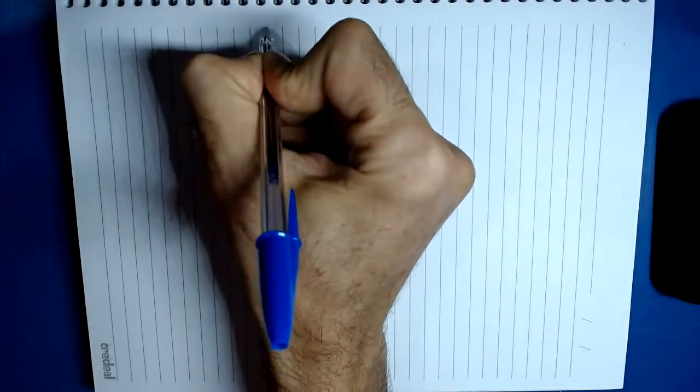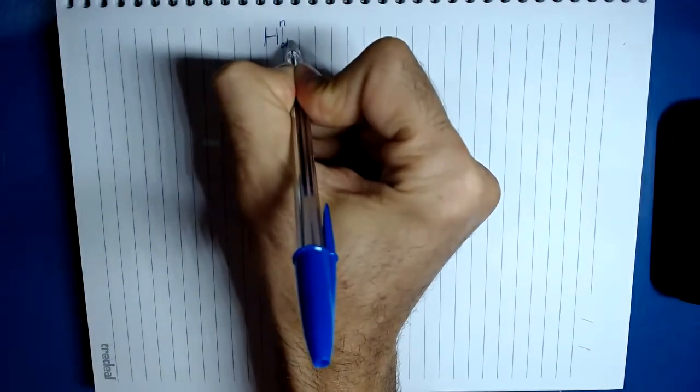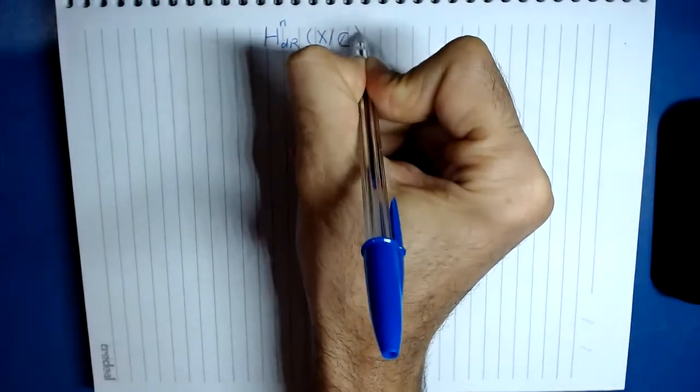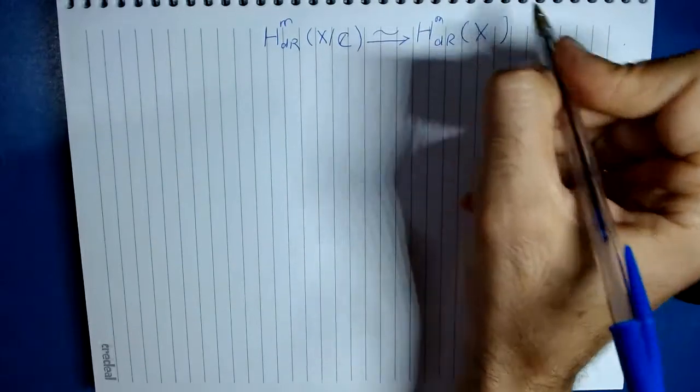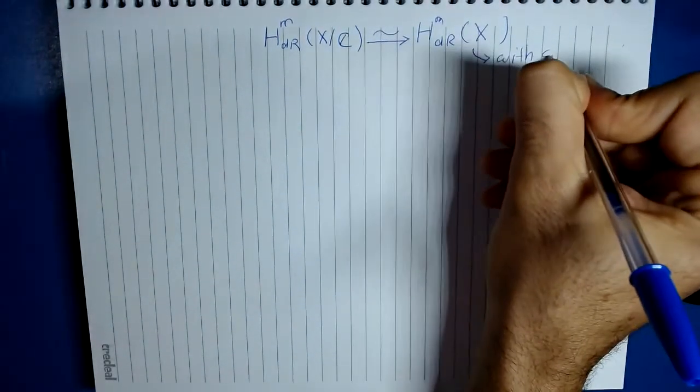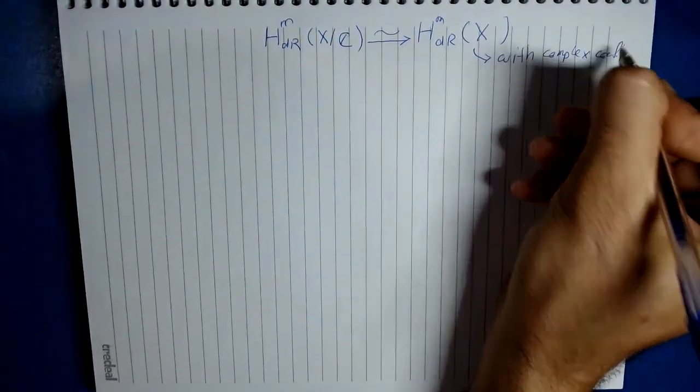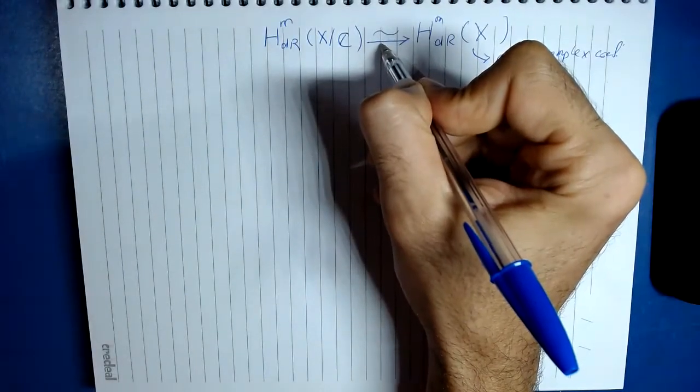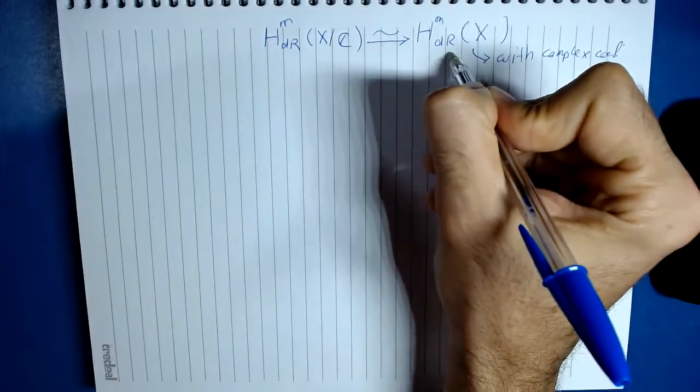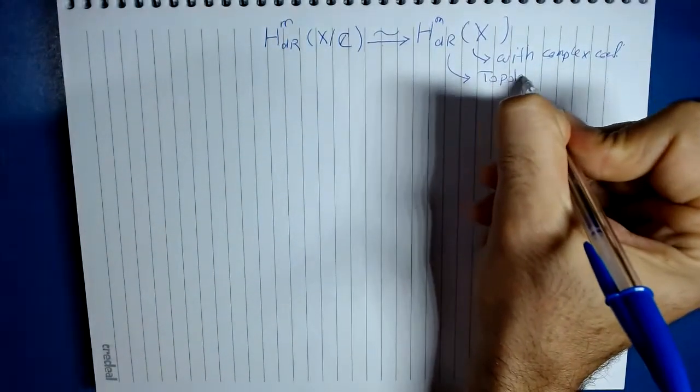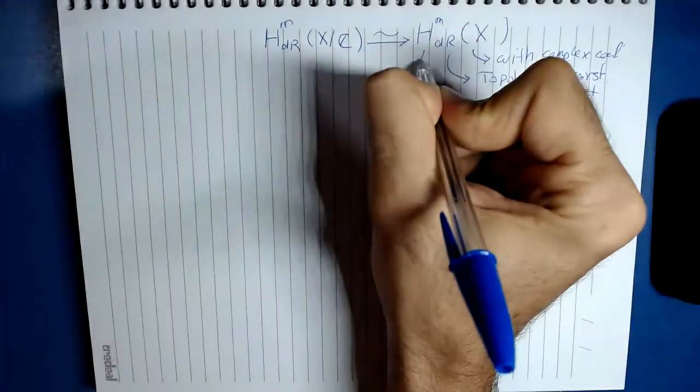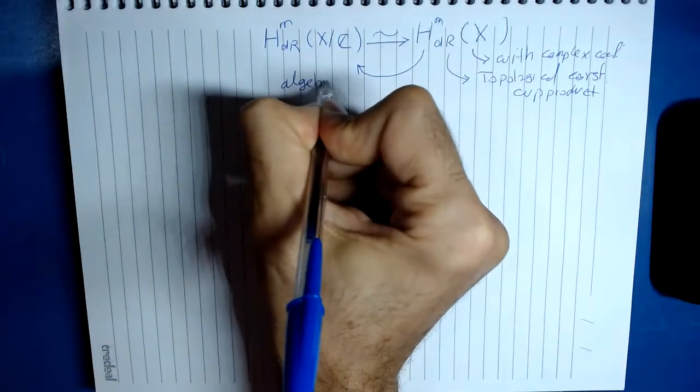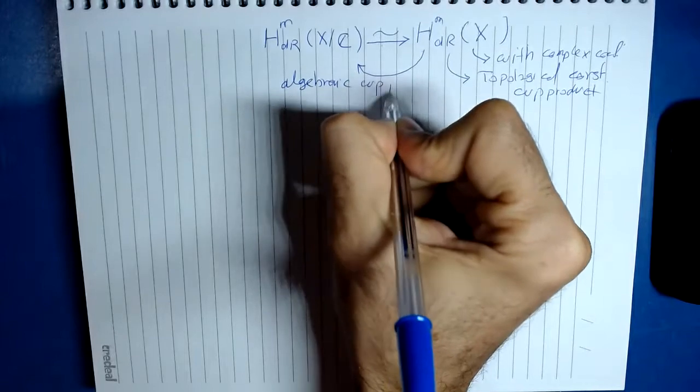One of the things that is not so clear in the literature, and with Roberto we have written it explicitly in our book, is that algebraic de Rham cohomology is canonically isomorphic to the classical de Rham cohomology, when we consider X as a C-infinity manifold, and this de Rham cohomology with complex coefficients. This isomorphism is not an arbitrary isomorphism. It is explicitly given, and this means that whatever construction, topological construction here we have, like coproduct, product, we can transfer it to the algebraic side.